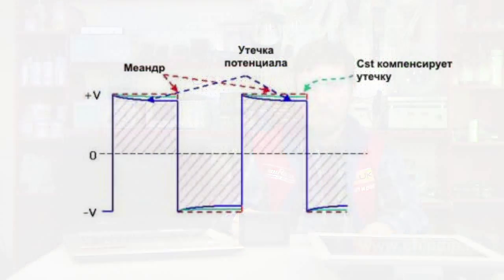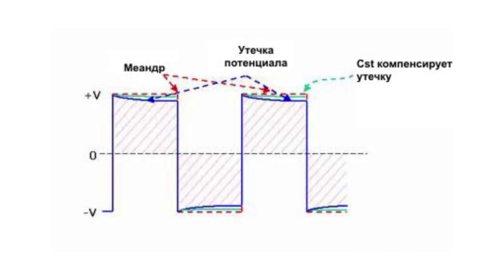Liquid crystals control should be implemented using an alternating voltage. In order to activate an LCD, a voltage is applied only when the switch is on; the switch turns off immediately after that. In some cases, the voltage across the liquid crystals will drop due to leakages. To prevent this situation, we can use a parallel capacitor to compensate the leakage voltage. As the capacitance CST increases, the voltage waveform across it approximates to a meander.